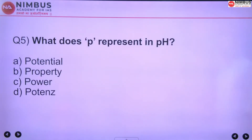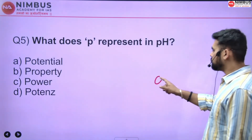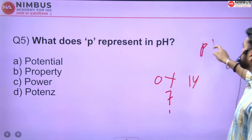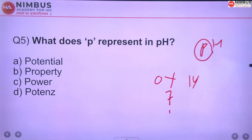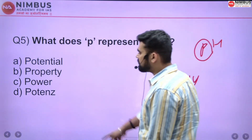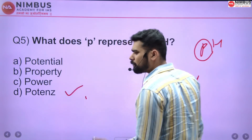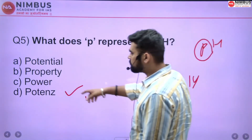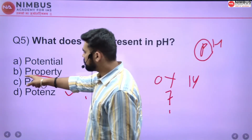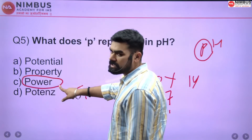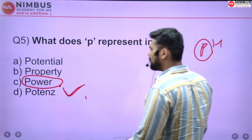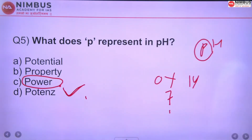What does 'P' represent in pH? The pH scale runs from 0 to 14, with 7 being neutral. The right answer is D — potence, which is a German word. This question is a little controversial because potence's English meaning is 'power.' There was a lot of debate on this, but according to NCERT, P in pH stands for potence.